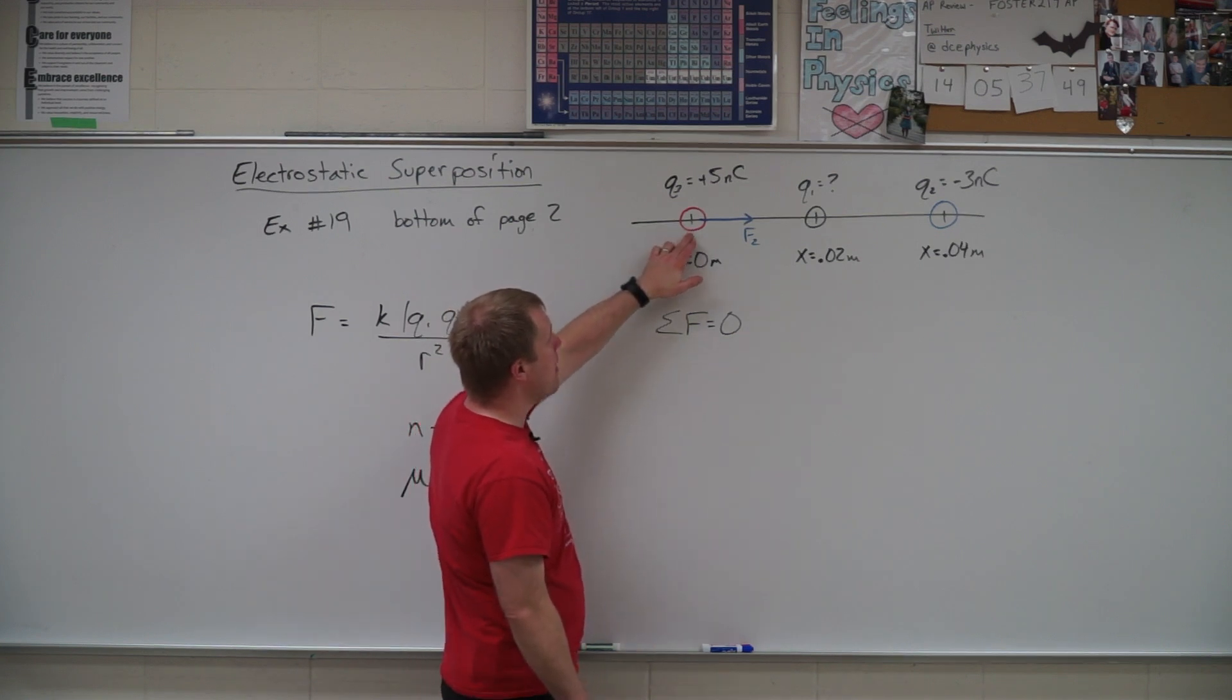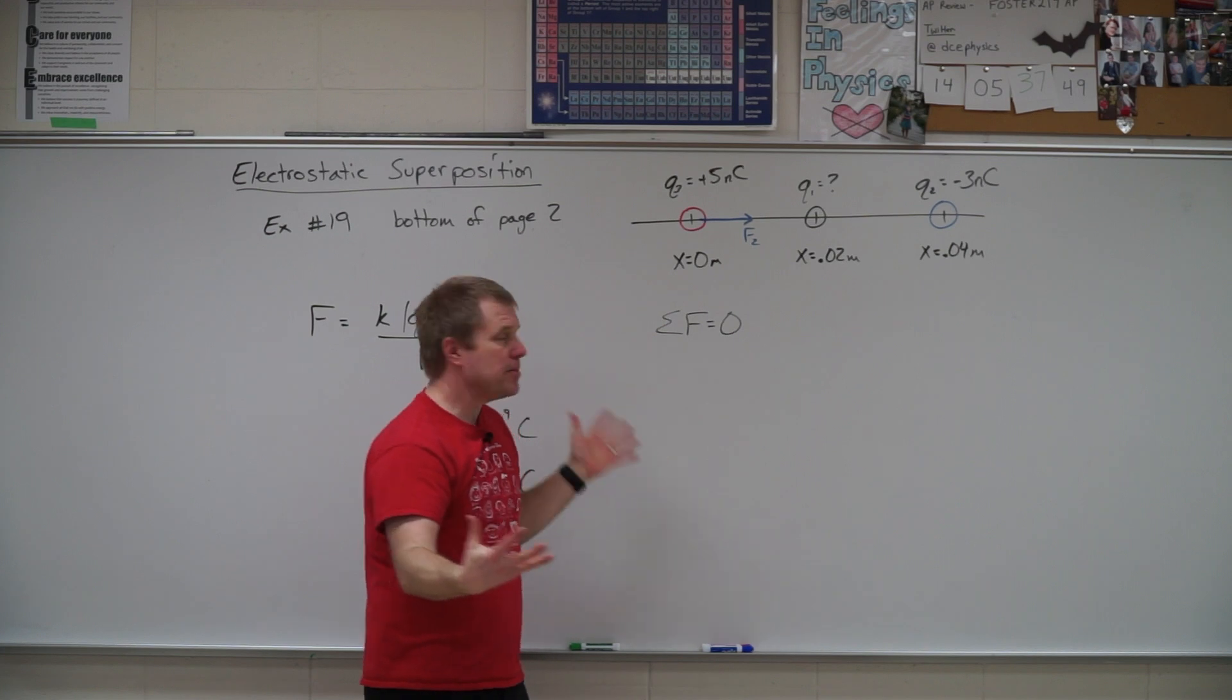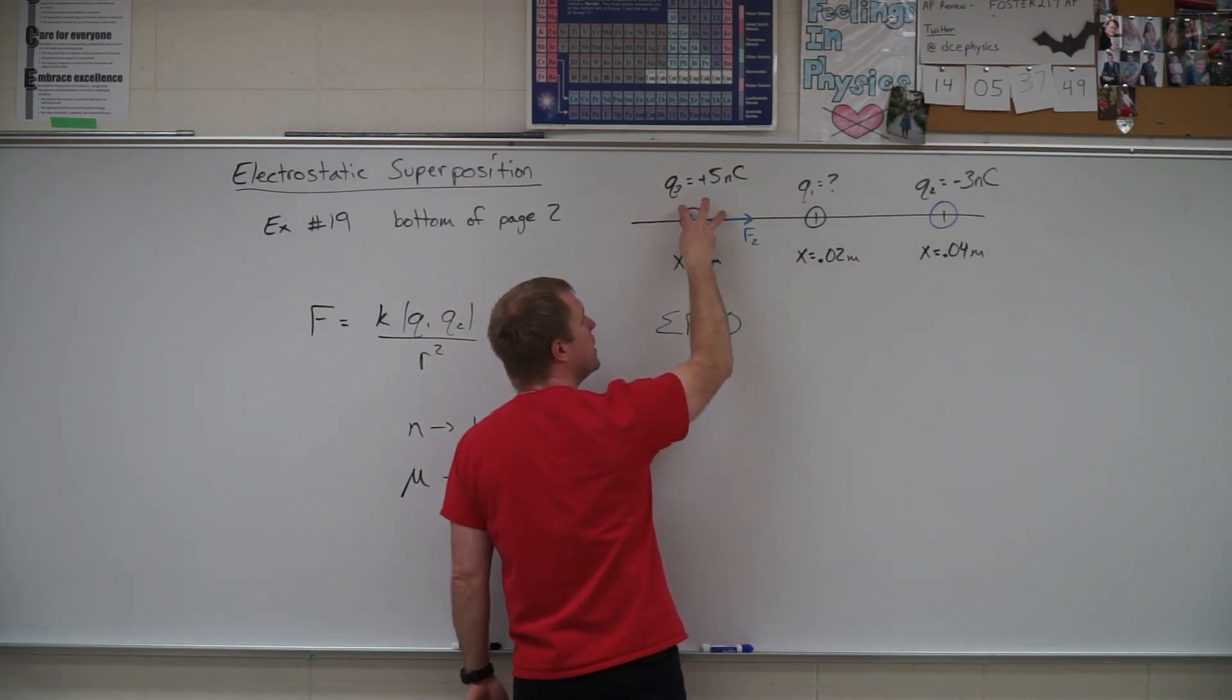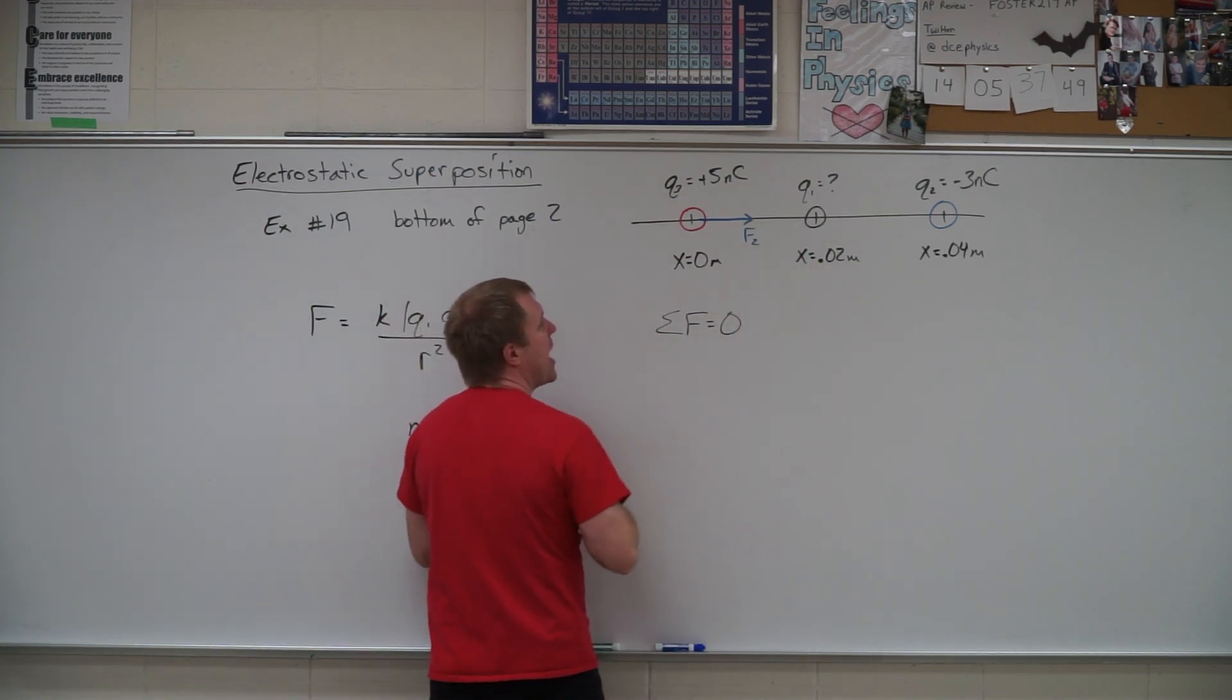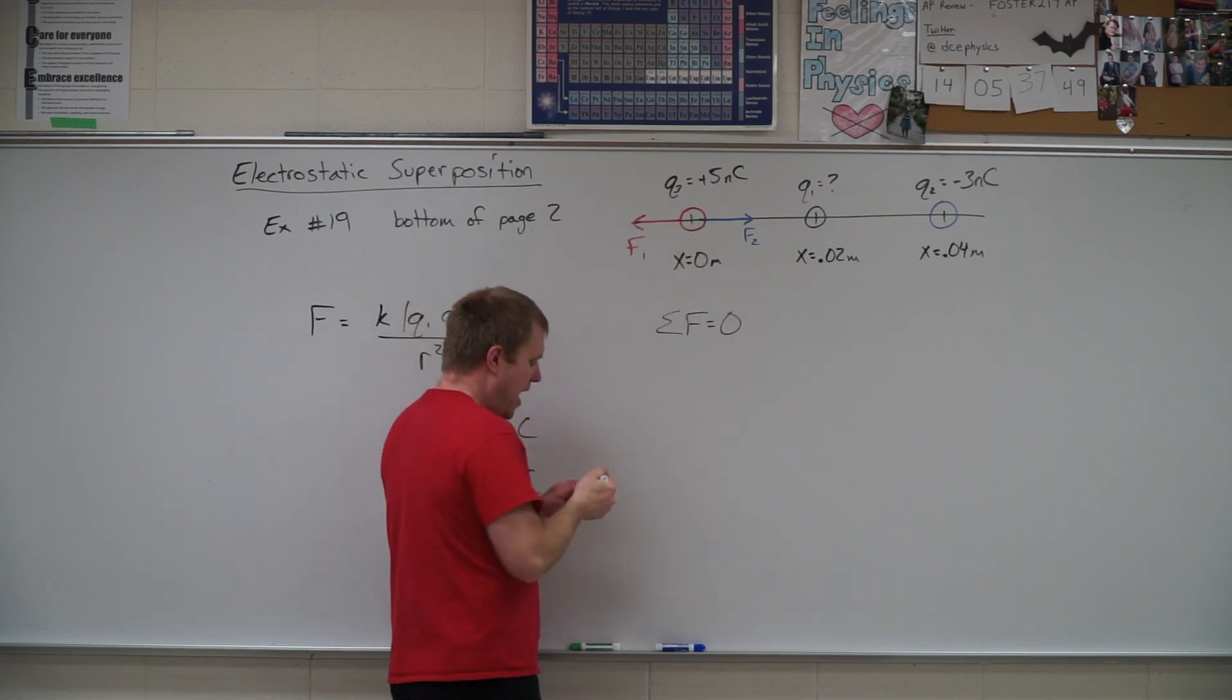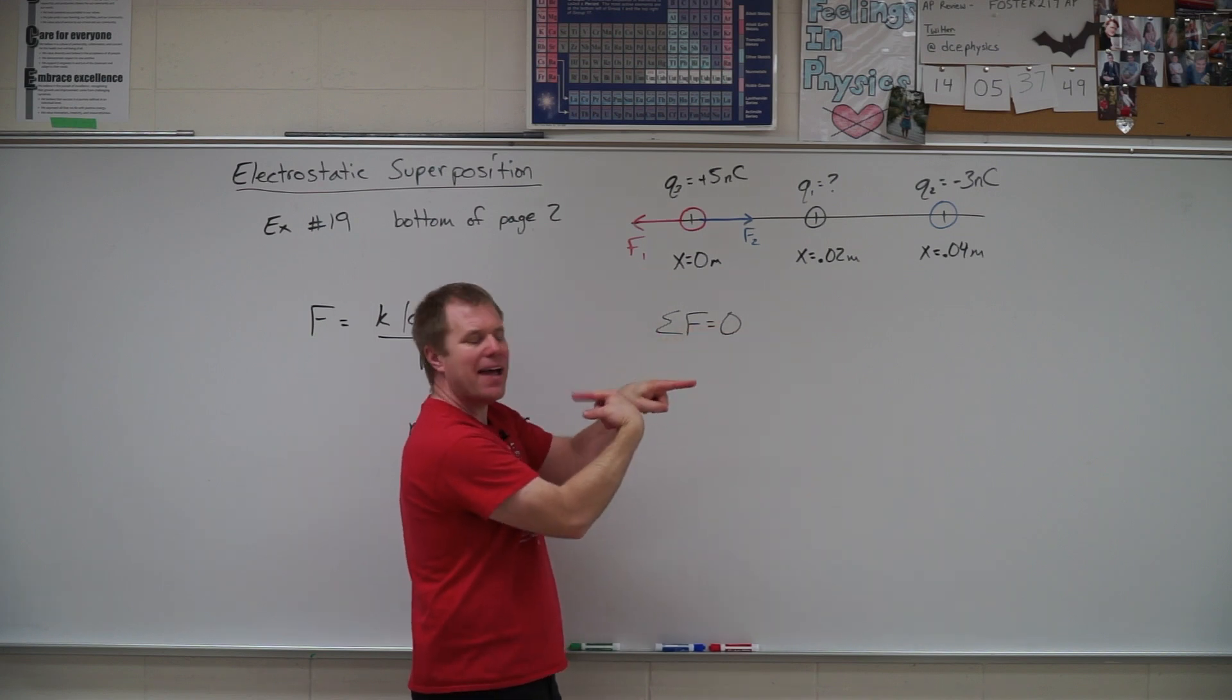So thinking about this positive charge and this negative charge, they're opposites, so they attract, meaning q2 is pulling q3 this way. So in order for the net force to be zero, that means that our unknown charge has to be pushing it in this direction. And if I have one force this way, one force this way, they can balance out.